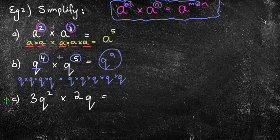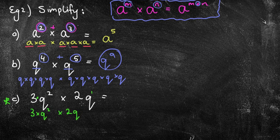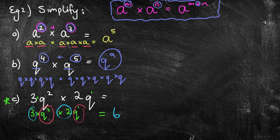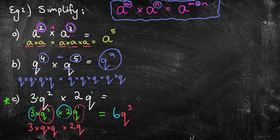Then we come to the ultra-hard question. So this one, we've got 3Q squared. Can you remember what's in between the 3 and the Q? Hopefully a few of you said times. So what this actually means is 3 times Q squared times 2Q. Now there's no number there, but actually there's a little 1 because I just have one of the Q's there. When we're doing this multiplication, we're going to deal with the numbers first. What's 3 times 2? That's 6. And then I can deal with my letters — I've got Q squared times Q to the power of 1. Using our rule, 2 plus 1 is 3. So I've got 6Q to the power of 3.